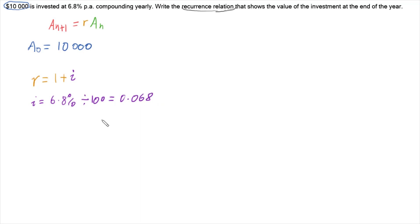And we'd also have to consider dividing it by how many times it happens each year. But because this is happening yearly, we don't need to worry about that for this problem. So then we can go back to r. r is going to be 1 plus that 0.068, which means that r is 1.068.